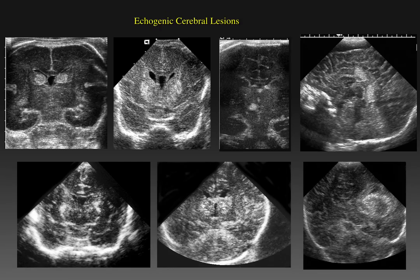These seven infants, each of whom have a focal echogenic lesion, they look quite similar. However, each of them has a different diagnosis that we will summarize at the end of the talk.